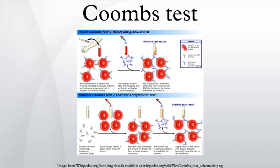The indirect Coombs test is used to detect in vitro antibody-antigen reactions. It is used to detect very low concentrations of antibodies present in a patient's plasma or serum prior to a blood transfusion. In antenatal care, the IAT is used to screen pregnant women for antibodies that may cause hemolytic disease of the newborn. The IAT can also be used for compatibility testing, antibody identification, RBC phenotyping, and titration studies.